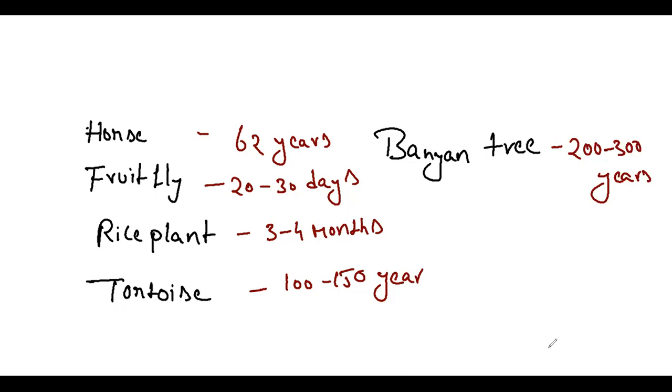Rice plant is 3 to 4 months crop. Tortoise is 100 to 150 years. Banyan tree is 200 to 300 years. So, these are the lifespans. Reproduction is a biological process.